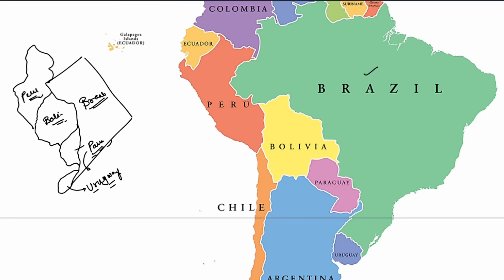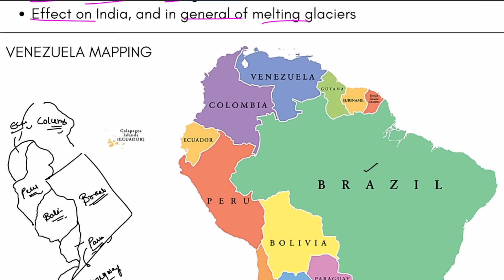Now Peru has borders with different countries. One it has a border with is Ecuador. Ecuador and Peru both have borders with the northern country known as Colombia — very important country, Colombia. All of these have borders with Brazil except for Ecuador. Then we come to the next country, Venezuela, which is the one we are talking about. Ecuador is a peculiar country not having any border with Brazil.